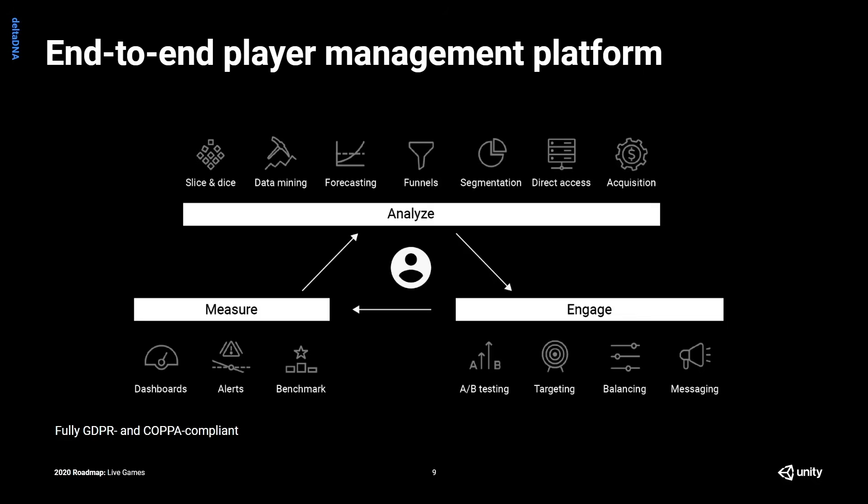We talk about this loop of measure, analyze, and engage. First, you're using dashboards and alerts to identify problems in the measure part of the toolkit. Then you're digging deep into the data to really understand why you're seeing those trends in the analyze tools — data mining, forecasting, looking at funnels, that kind of stuff. Once you've found the solution, it's not enough to just understand it; you really want to act upon it. That's where the engage tools come in, with A/B testing and in-game messaging, so you can start to improve the game to address the problems you're seeing in the data.